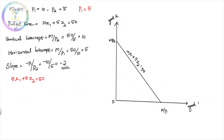If the vertical intercept is M divided by P2, then P2 will not change — the vertical intercept remains the same. Because only P1 is changing, the horizontal intercept will change. The horizontal intercept will change.